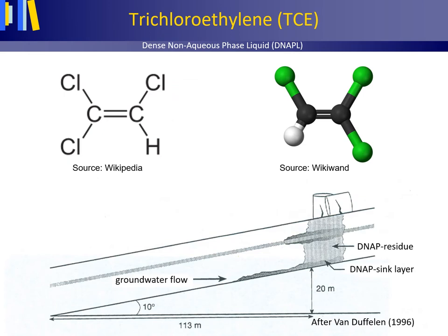A major threat to the production of drinking water in industrial countries is caused by the subsoil presence of trichloroethylene. Trichloroethylene, abbreviated as TCE (in Dutch, TRI), is a chlorinated hydrocarbon commonly used as an industrial solvent. TCE is a co-carcinogen — a substance acting together with other substances to promote the formation of tumours. It cannot easily be removed from the subsoil. Since TCE is heavier than water and has a low solubility value, it is classified as a DNAPL — a dense non-aqueous phase liquid.